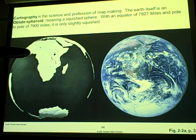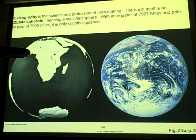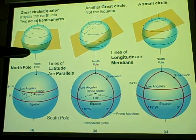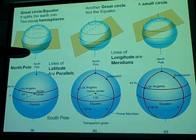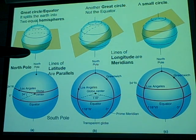The Earth itself is not a perfect sphere. It is an oblate spheroid, meaning basically a squished sphere — it bulges around the equator, but only slightly. So if you're going to divide up the Earth in order to create a coordinate system, there are a number of ways you can break it up.